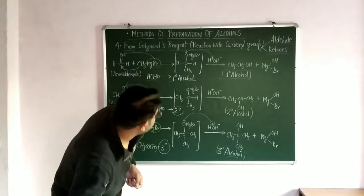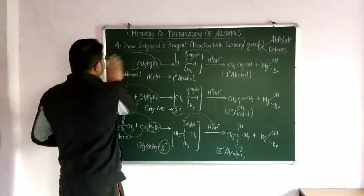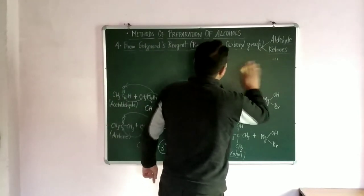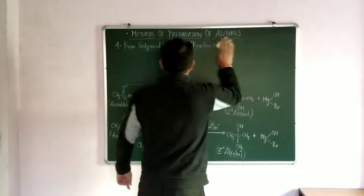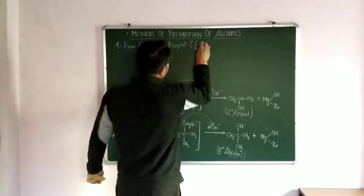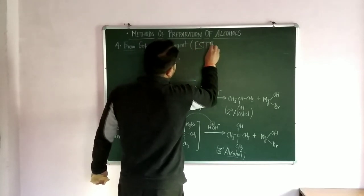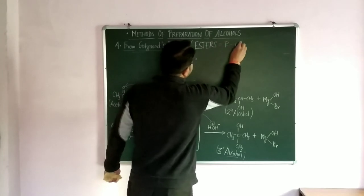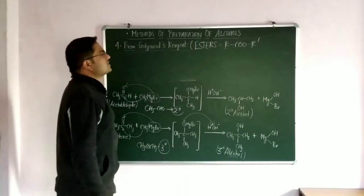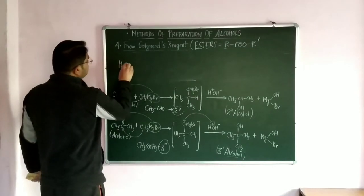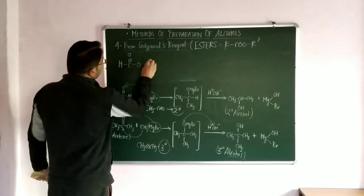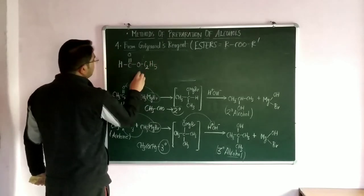First, if we proceed with the formula for esters, as we know the formula for esters reacting with Grignard reagent, the formula for esters is RCOOR'. If we form the very first member of ester, that is HCOOC2H5, that is alkyl alkanoate. On the basis of alkyl alkanoate, it is ethyl methanoate.